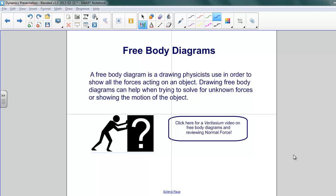A free body diagram is a drawing that physicists use in order to show all forces acting on an object. Drawing a free body diagram can help when trying to solve for unknown forces or showing the motion of an object. There's a good video here that if you can click on the link in your notebook, you can have a review of free body diagrams and the normal force.